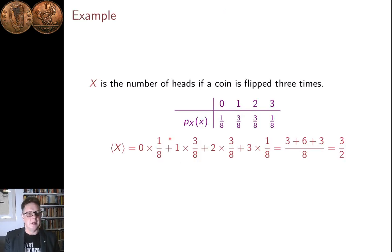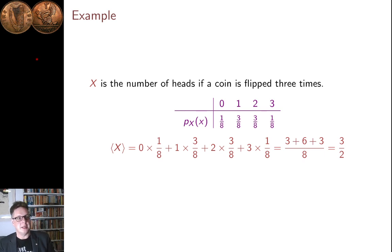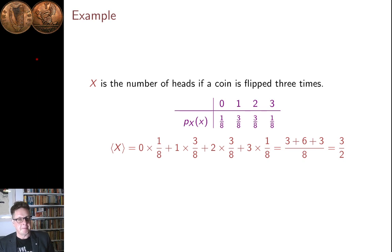Here's a quick example: the probability distribution for flipping a coin three times and counting the number of heads. With probability one eighth you get zero; with probability three eighths you get one; with probability three eighths you get two; with probability one eighth you get three. So X is a random variable — we have the set of outcomes, which look like H,H,H or H,H,T and so on. From the set of outcomes we have a map to real numbers: the map that maps each outcome to the number of heads. And now we can ask: what's the expected value of that random variable, ⟨X⟩?